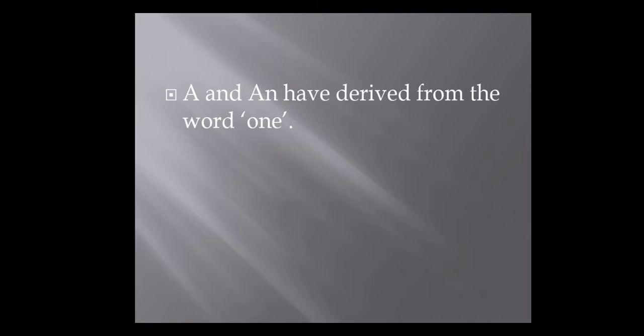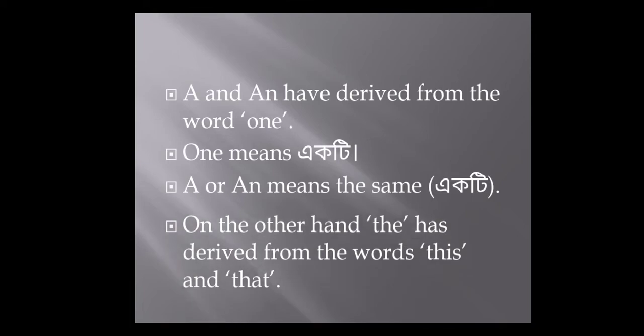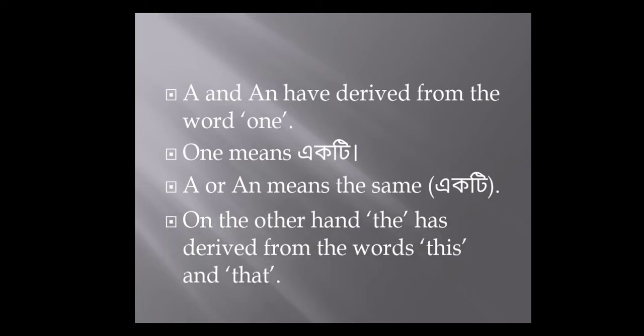A and an have derived from the word one. One means one. So, a and an have the same meaning. On the other hand, the has derived from the words this and that. So, all these are articles.